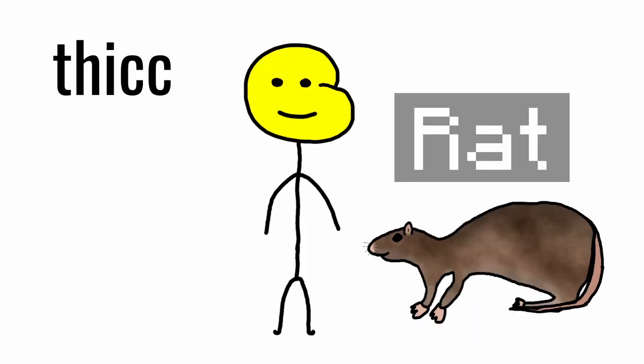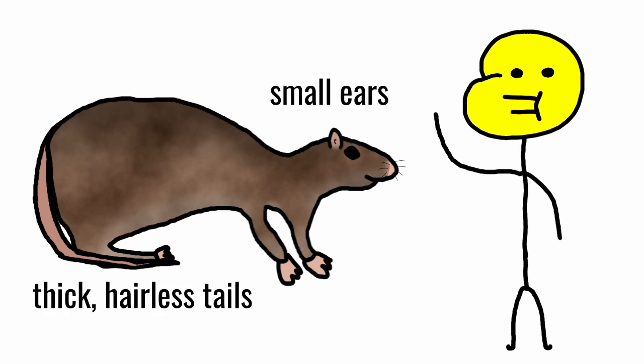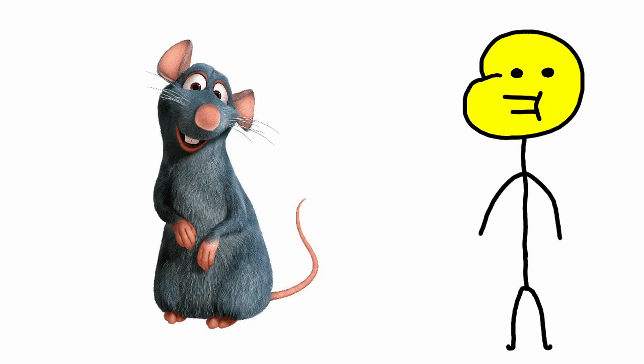Rats are thicker and they have more meat, so they could easily feed one medium sized child in case of an emergency. Rats have smaller ears and thick hairless tails. Think ratatouille.